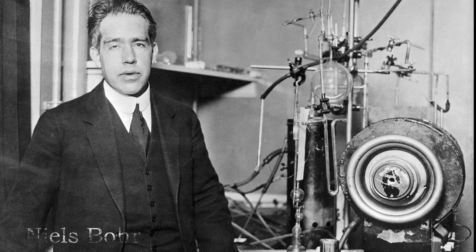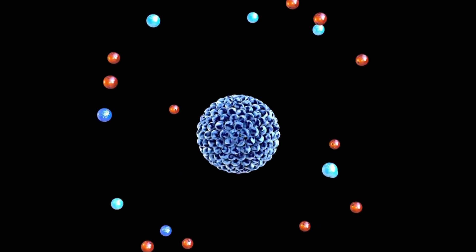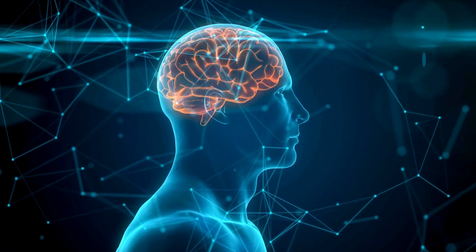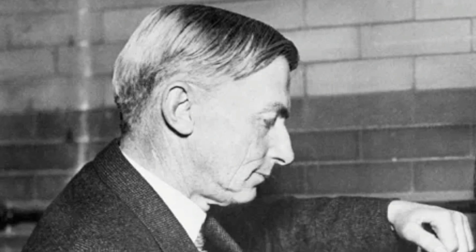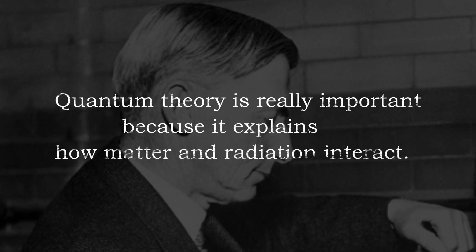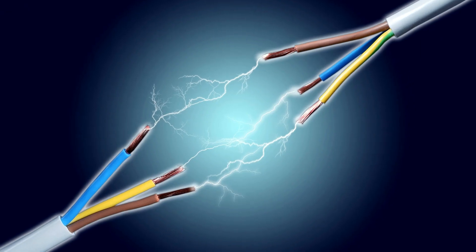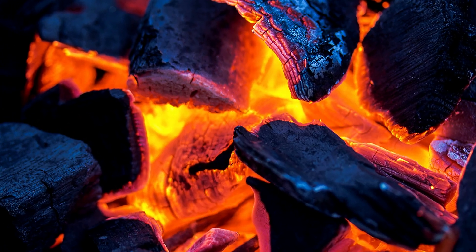In 1913, Niels Bohr used quantum theory to explain how atoms are structured. This made people realize that they needed to rethink reality. By 1921, more people started to learn about quantum physics. That year, the first popular explanation of quantum theory was published by William D. Harkins. He said that quantum theory is really important because it explains how matter and radiation interact, helping us understand electricity, chemical reactions, and how matter responds to heat.